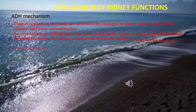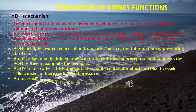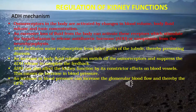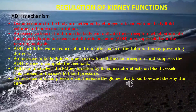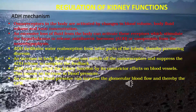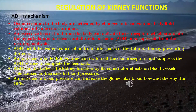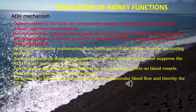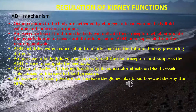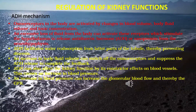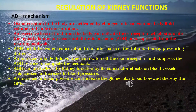Osmoreceptors in the body are activated by changes in blood volume, body fluid volume, and ionic concentration. Excessive loss of fluid activates these receptors, stimulating the hypothalamus to release antidiuretic hormone (ADH) or vasopressin from the neurohypophysis. ADH facilitates water reabsorption from the latter parts of the tubule, thereby preventing diuresis. An increase in body fluid volume switches off the osmoreceptors and suppresses ADH release. ADH can also cause vasoconstriction of blood vessels, increasing blood pressure, glomerular blood flow, and GFR.